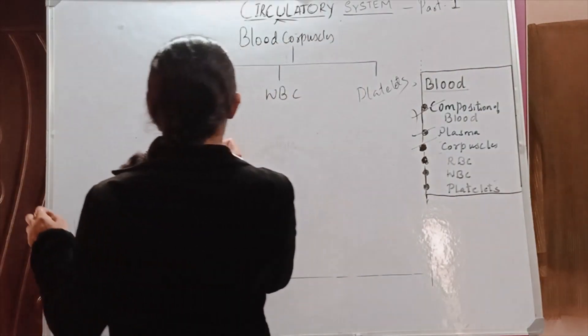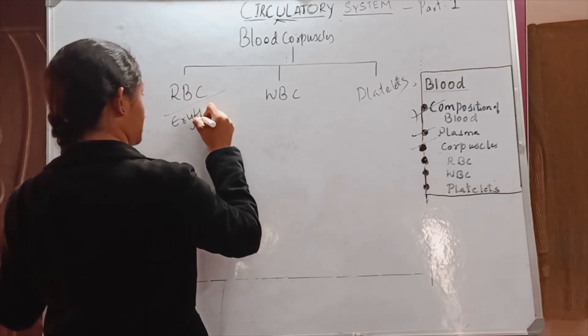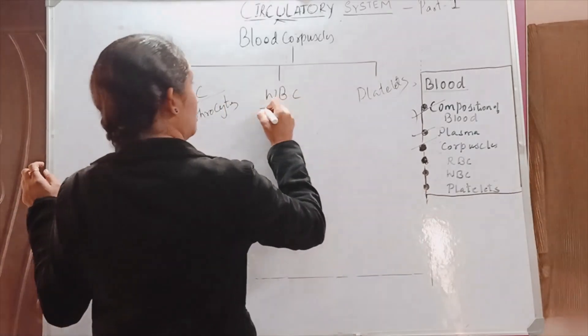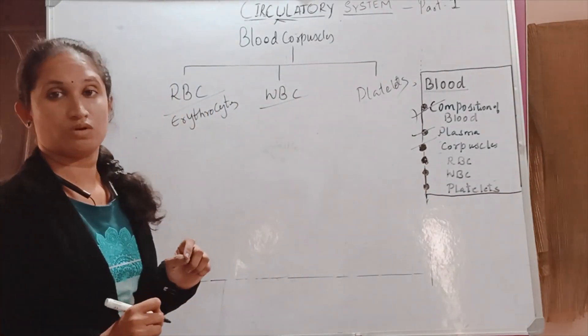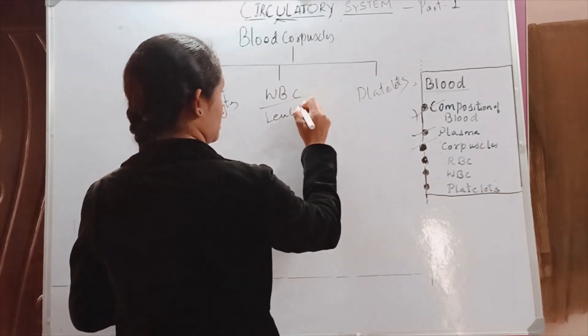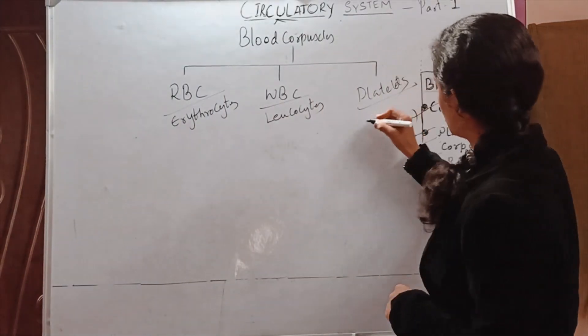RBCs are also called as erythrocytes. WBCs are also known as leukocytes, and platelets are also called as thrombocytes.